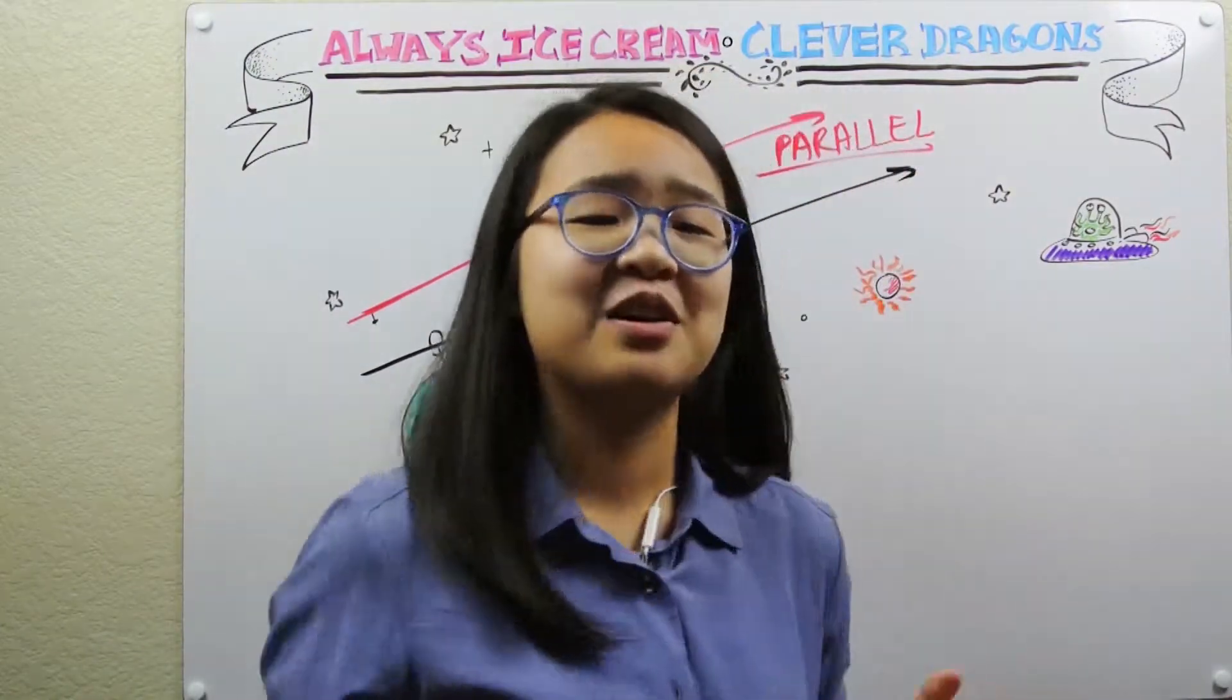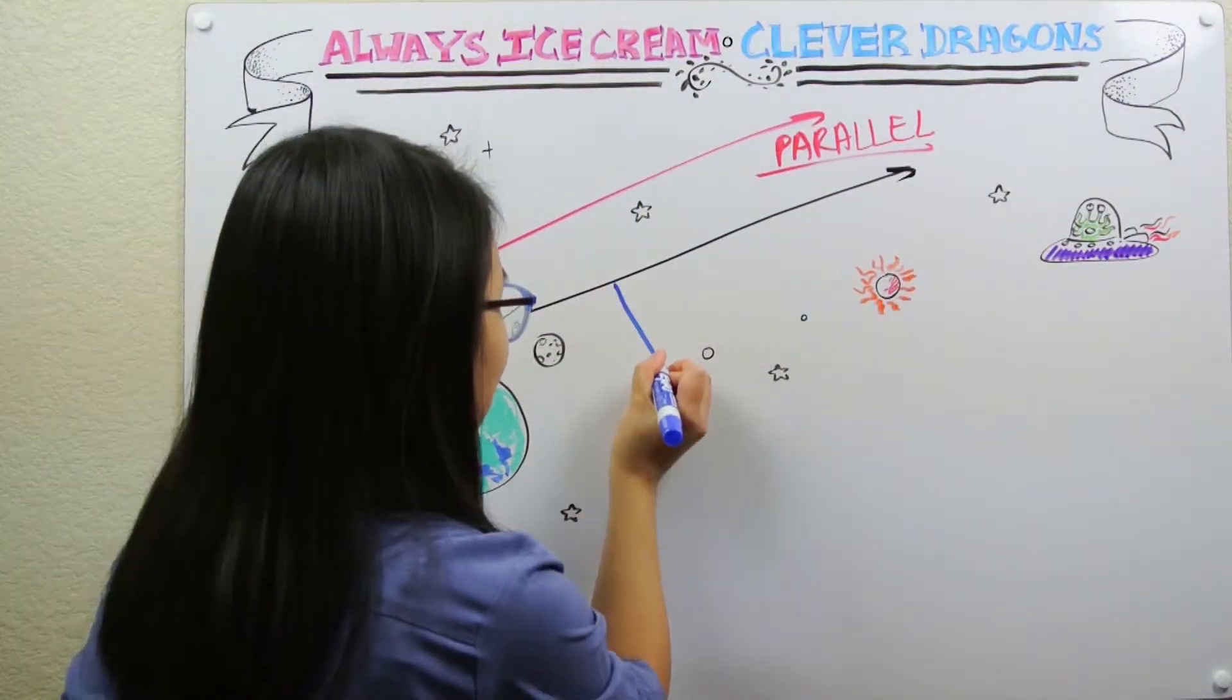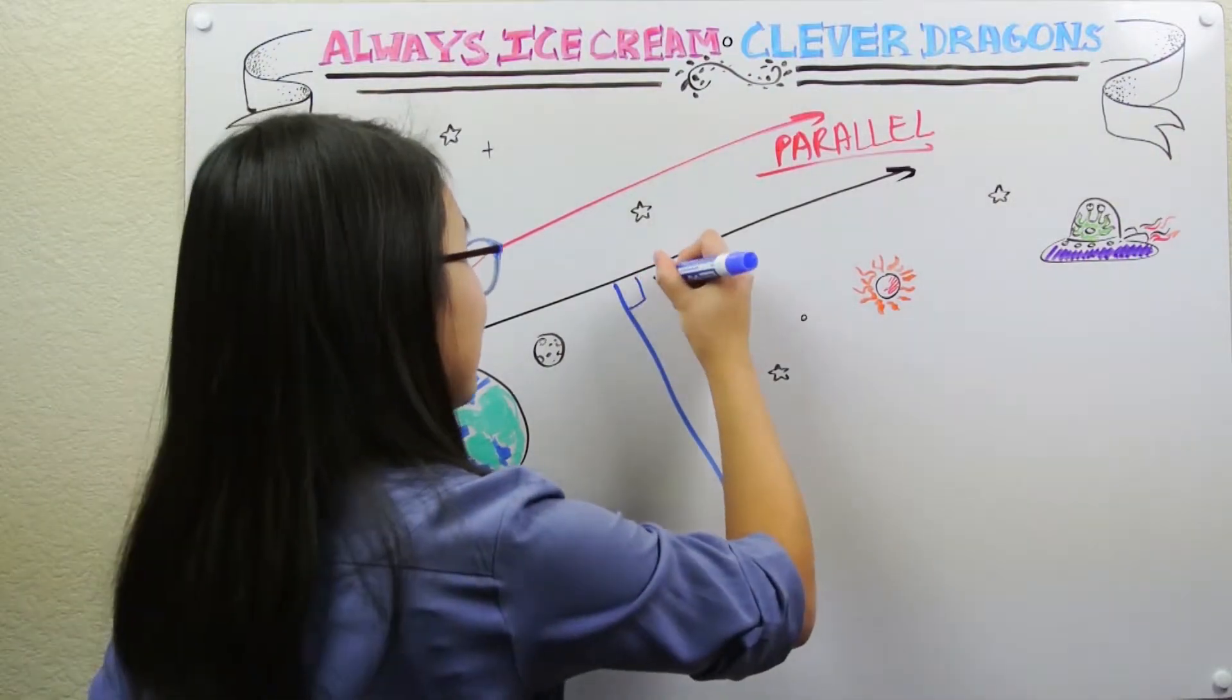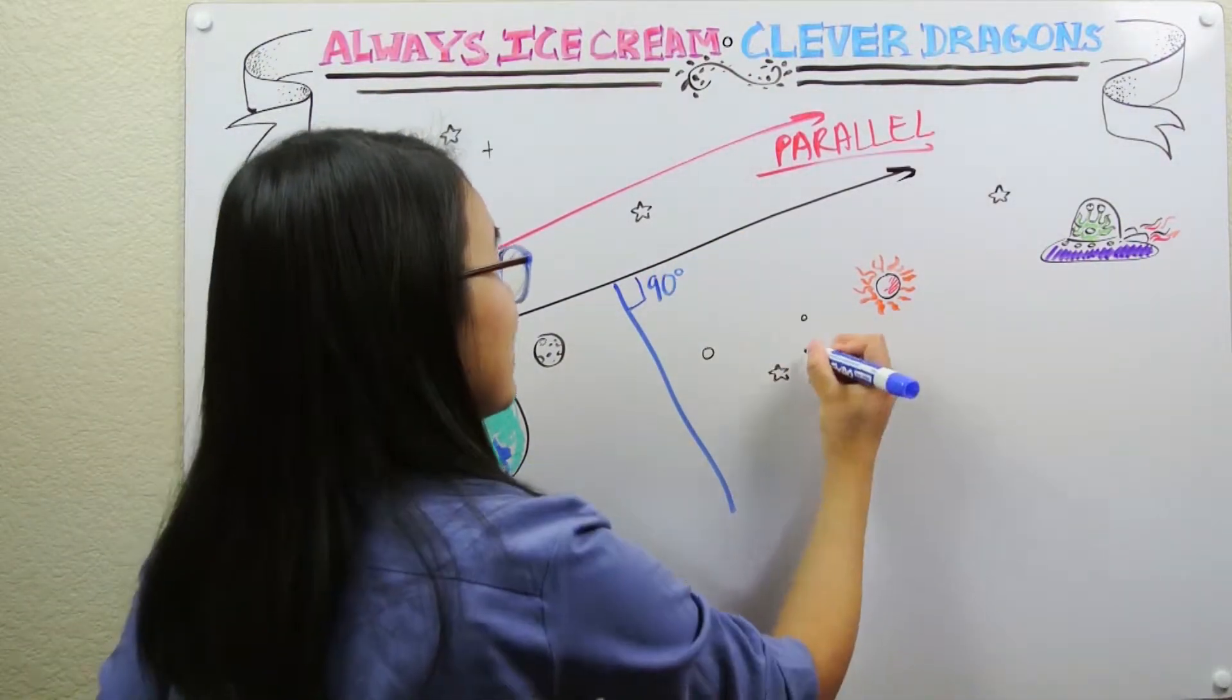On the other hand, what if we made a line that did meet the first one? Well, if the angle between the two of them was 90 degrees, they would be perpendicular.